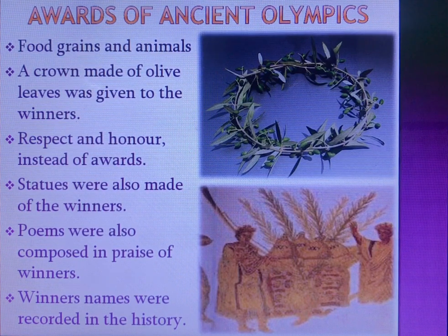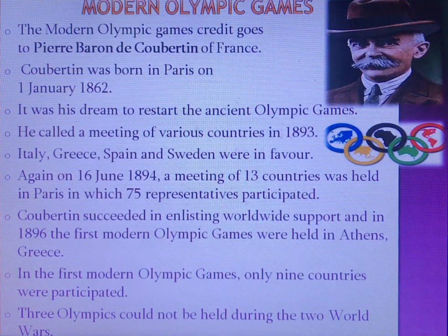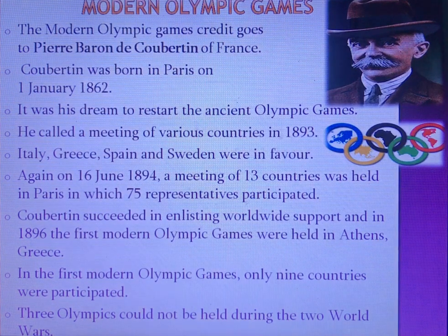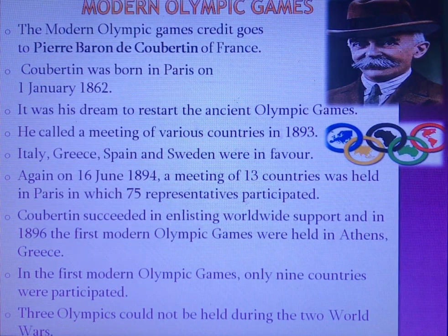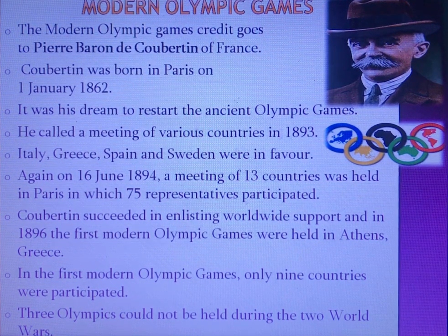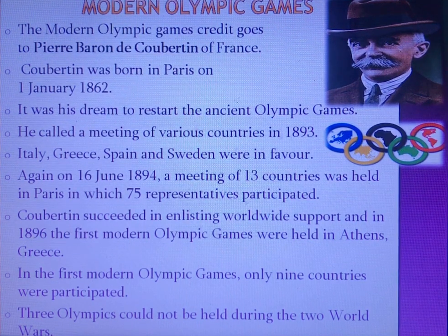Now we move to the second topic: Modern Olympic Games. The person pictured is Pierre de Coubertin, the father of Modern Olympic Games. He was the founder of the International Olympic Committee and its second president. He was born in Paris on 1st January 1862. His parents wanted him to join the army, so he joined a military academy, but after some time he left and started to study political science.